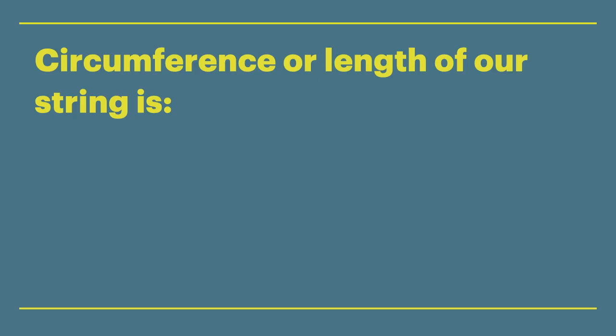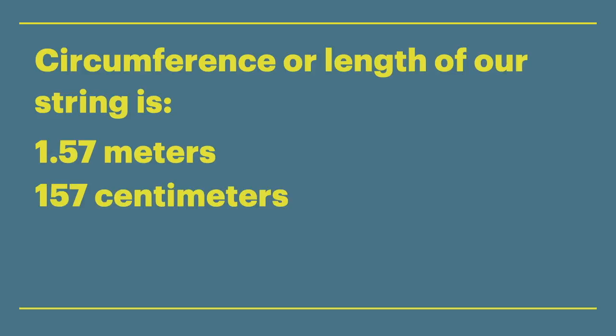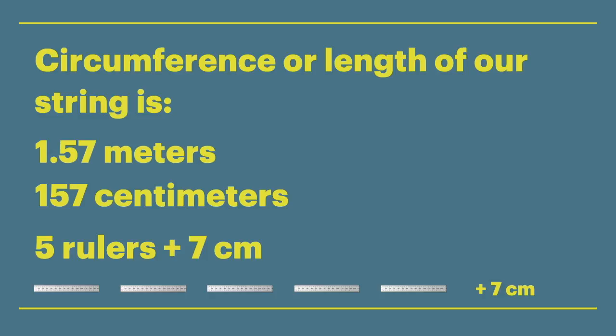So to finish, the circumference or length of our sampling tool, also known as our string, is 1.57 meters, 157 centimeters, and 5 rulers plus 7 centimeters long.